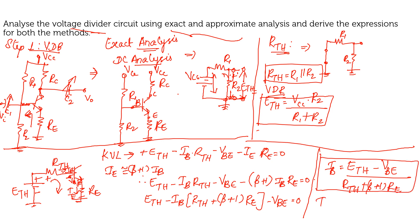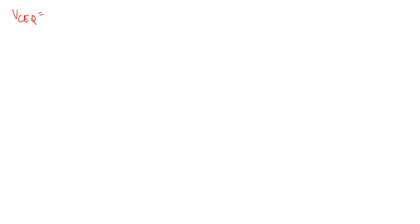If you know IB, you can find IC. IC is equal to beta into IB. Instead of IB you can substitute the derived expression. Once IC is found, the next step is to find VCEQ by applying KVL across the output loop.